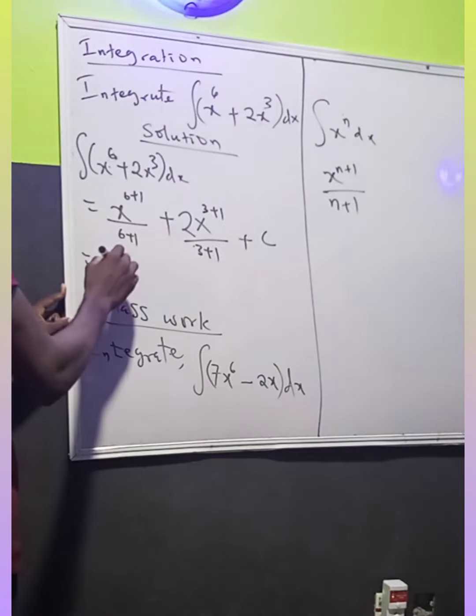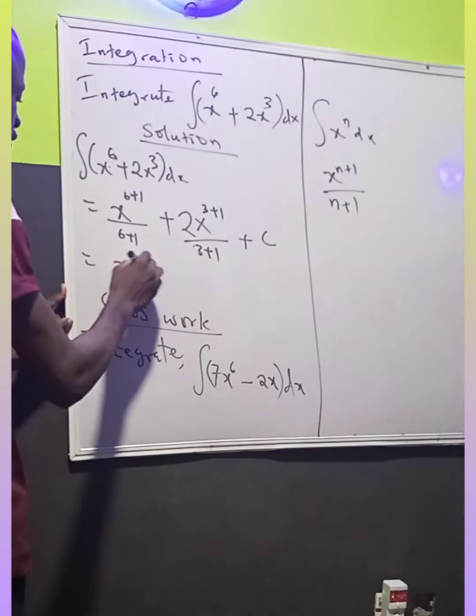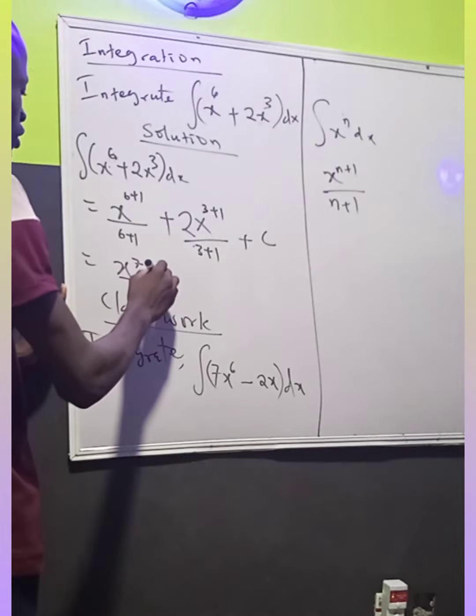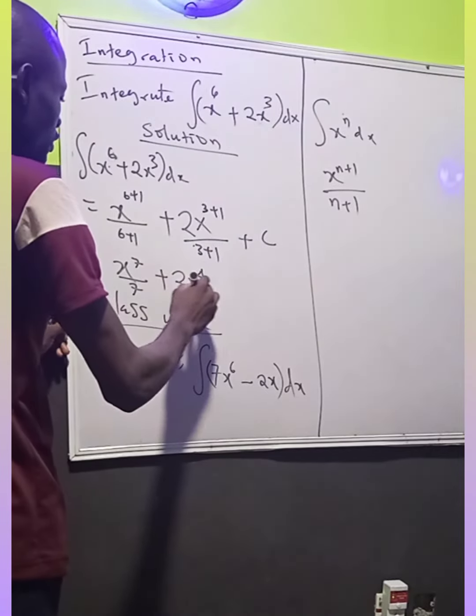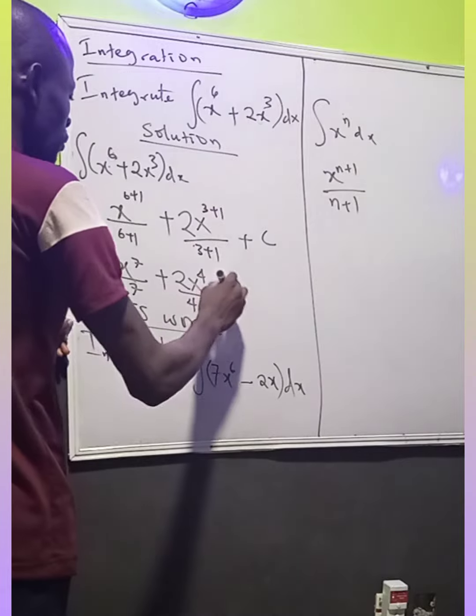So everything will now give you x raised to power 7 divided by 7 plus 2x raised to power 4 divided by 4 plus c.